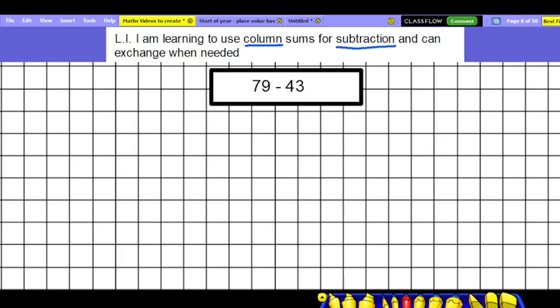Now as before, the most important thing with chimney sums, or certainly one of the most important things with chimney sums or column sums, is that we line up our columns really well. So we need tens and we need units. I can see 79 here, which is 7 tens and 9 units. I can see 43 here, that is 4 tens and 3 units.